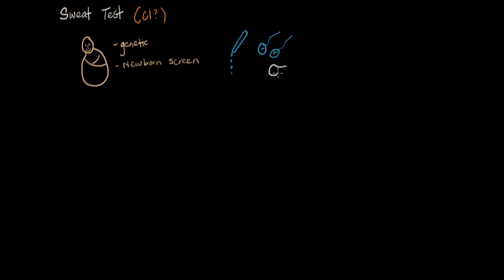and this current stimulates the sweat gland. So if this is the skin, back here is the sweat gland. So after it's stimulated to make sweat, we then collect it, send it to the lab, and see how much chloride there is. That is the sweat test.